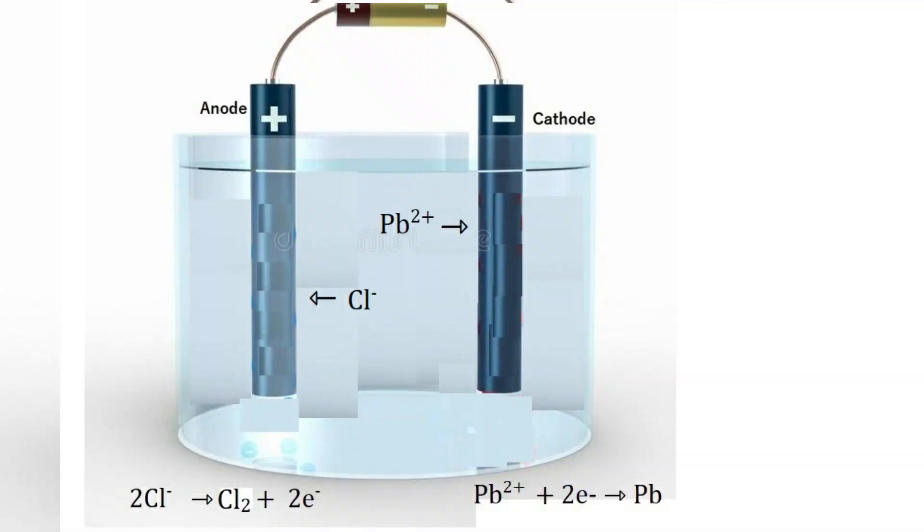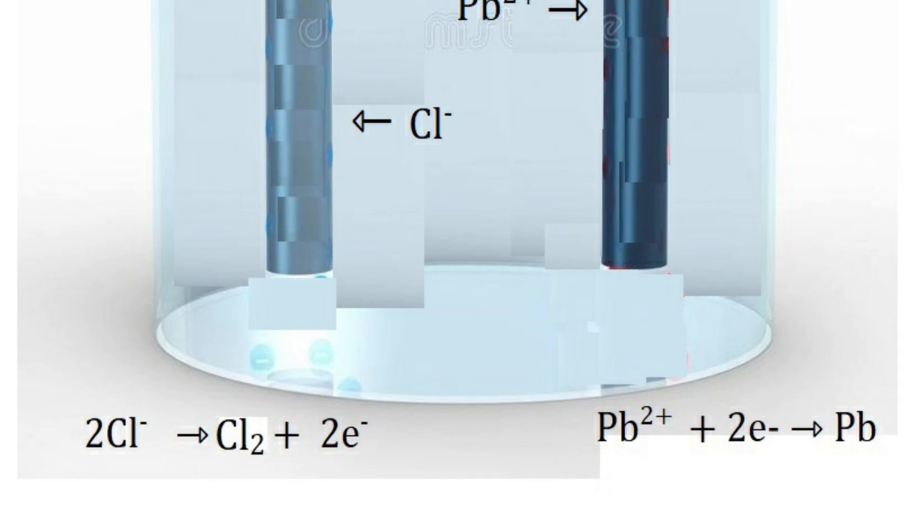When you have electrolysis in which the electrolyte contains just one cation and one anion, then the reactions are very simple, because you just have one cation that will gain electrons and one anion that will lose electrons. For example, suppose you have lead chloride electrolysis. When you electrolyze lead chloride, you first need to melt it to have mobile ions. When you get mobile ions after melting, you have lead ions and chloride ions separate. When you pass electricity through them with electrodes, the lead ions will approach the cathode and gain electrons to form lead metal, and the chloride ions will approach the anode and lose electrons to form chlorine gas.